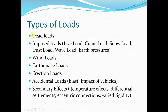The different types of loads acting on steel structures transferred to beams include: dead loads, imposed loads (also called live loads), crane loads, snow loads, dust loads, wave loads, earth pressures, wind loads, earthquake loads, erection loads, accidental loads (from blasts, vehicle impacts), and secondary effects such as temperature effects, differential settlements, eccentric connections, and varied rigidity.